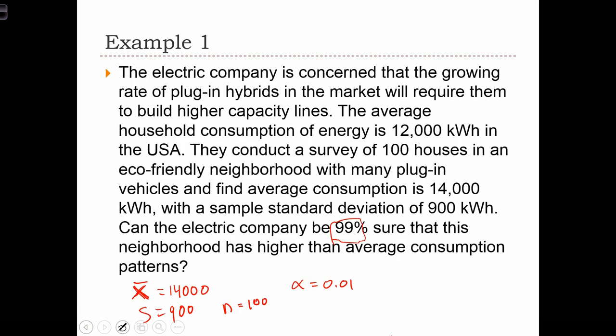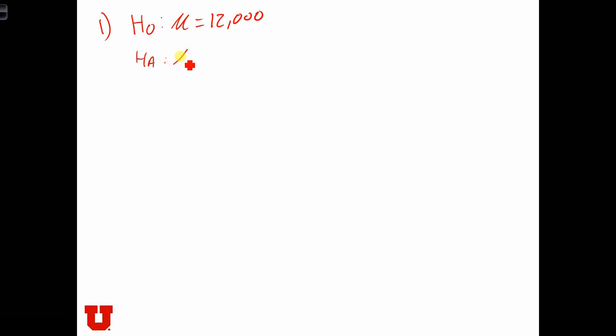So first, let's state the null hypothesis. In this case, the null hypothesis is that the neighborhood has average consumption patterns. So the null hypothesis is that mu, the average consumption in that eco-friendly neighborhood, is the same as elsewhere: 12,000 kWh. The alternative—let's look at the wording to make sure of the directionality. Can the electric company be sure that there's higher than average consumption? So the alternative hypothesis is that the consumption in the neighborhood is going to be above 12,000.